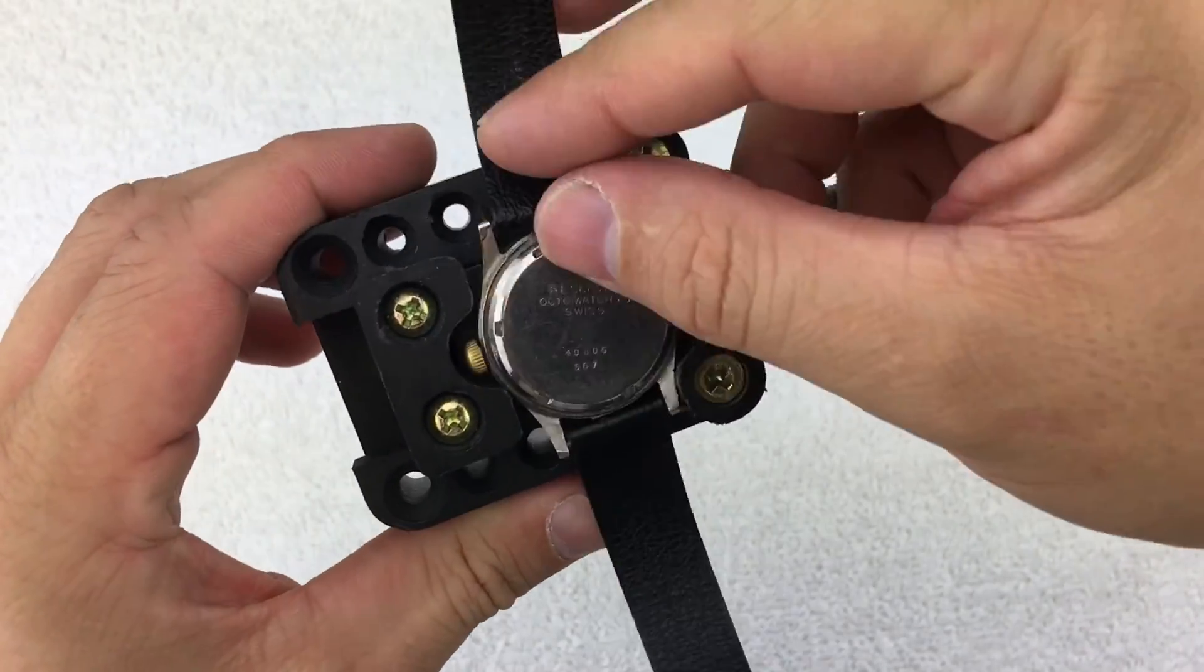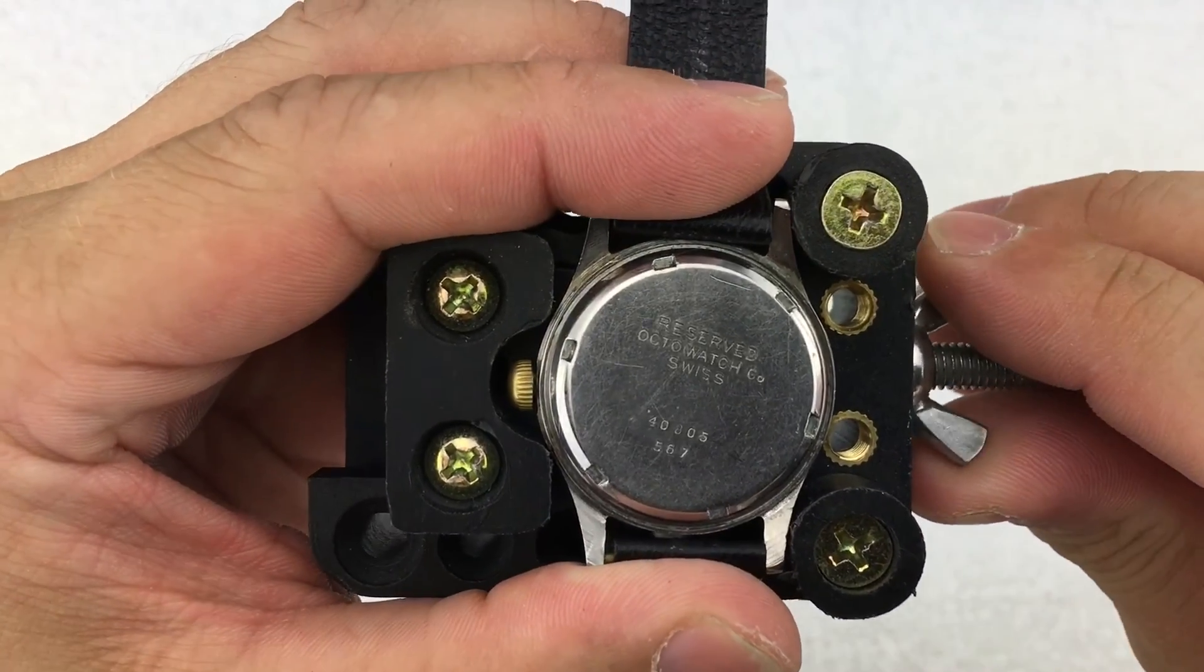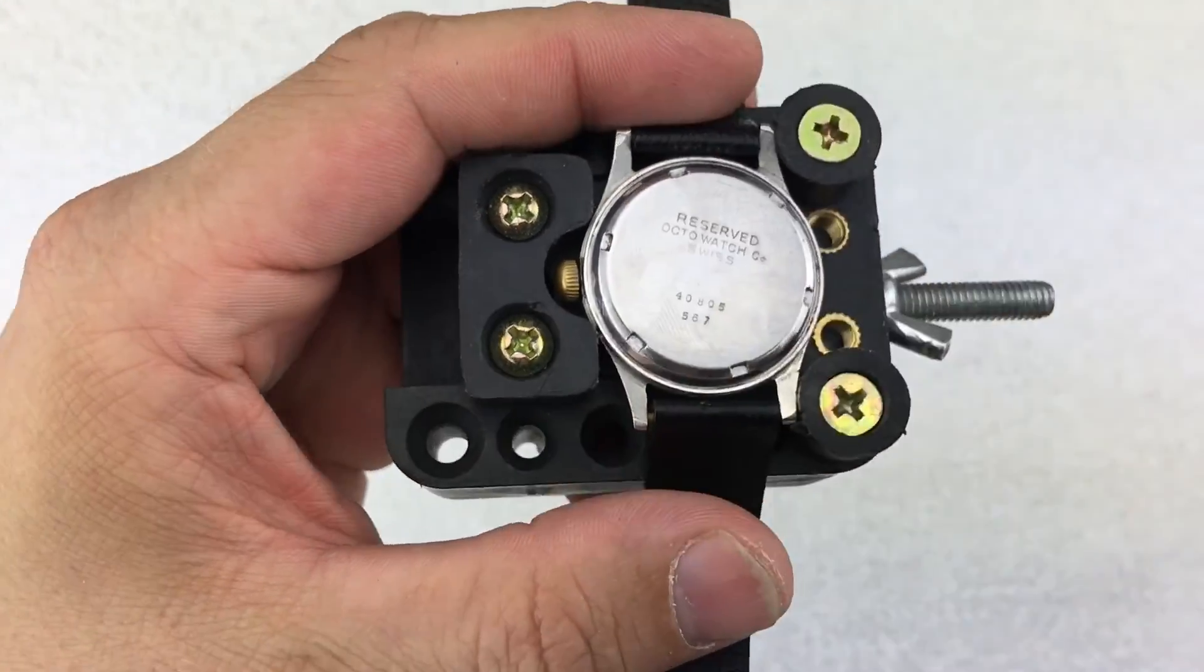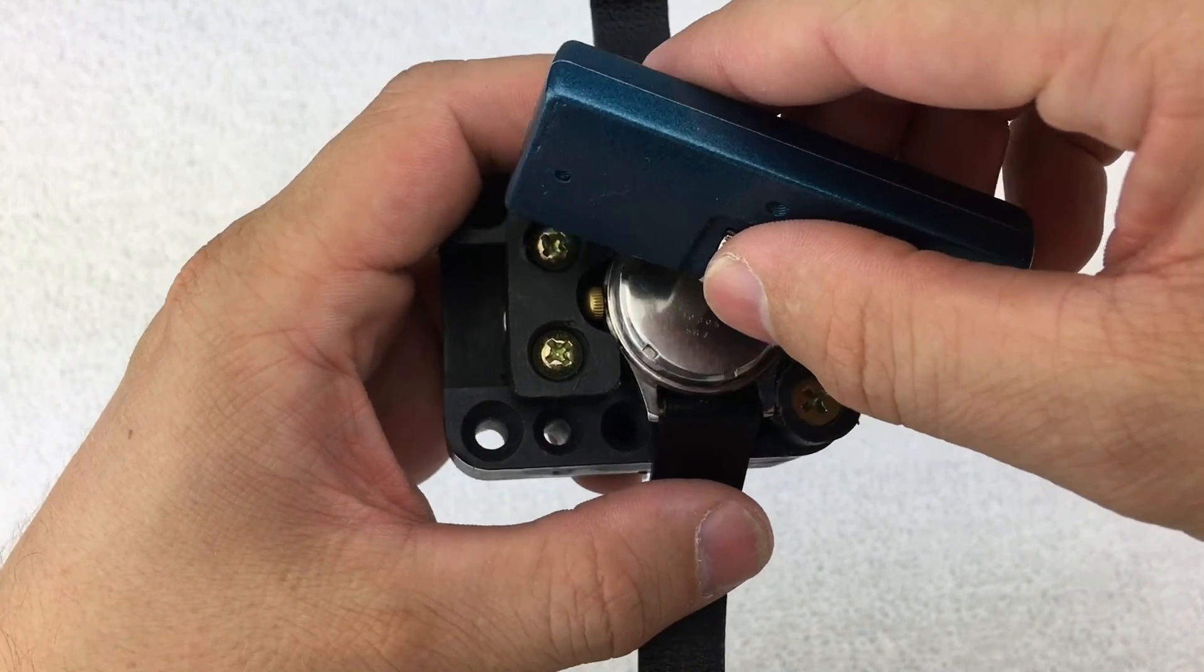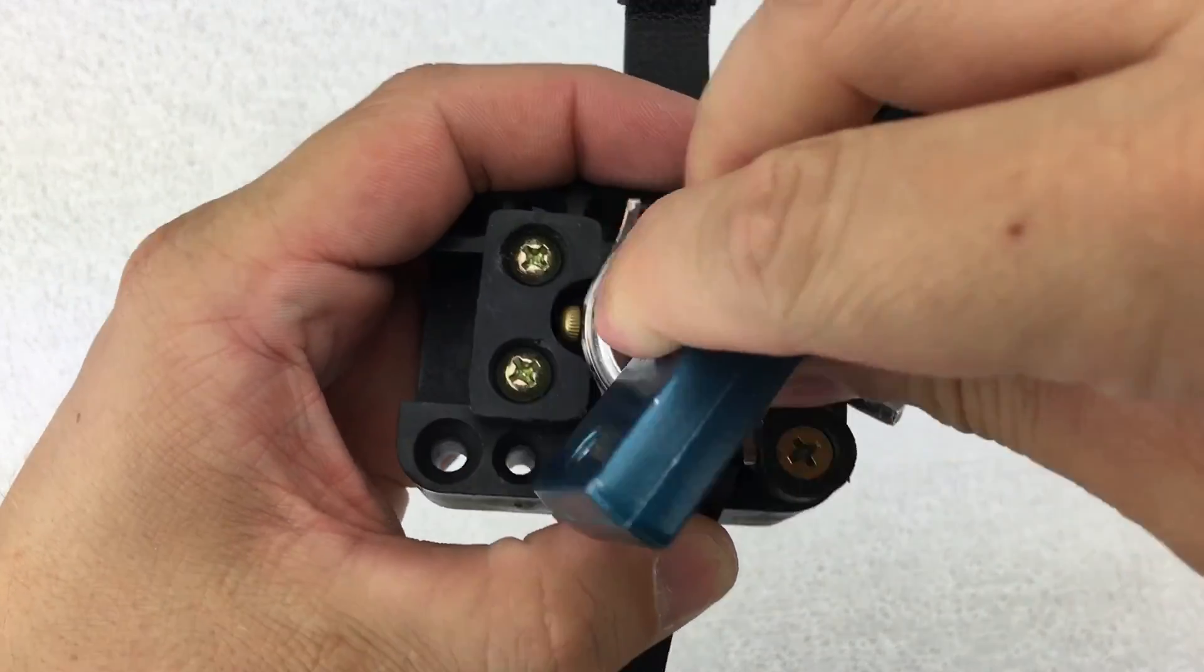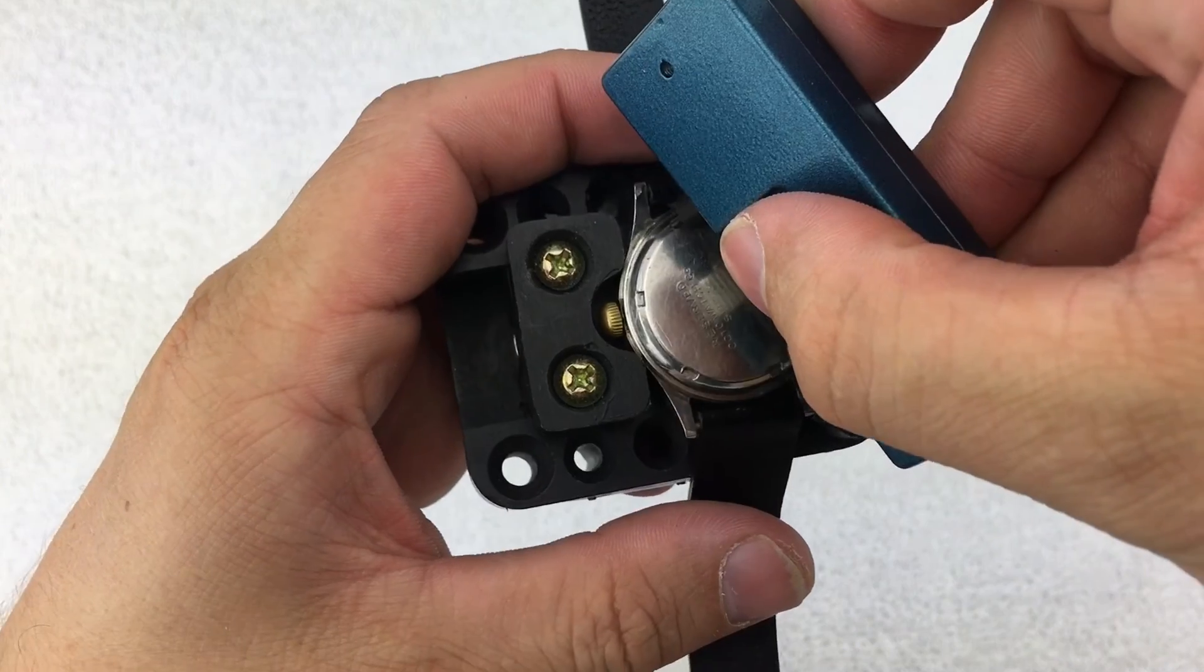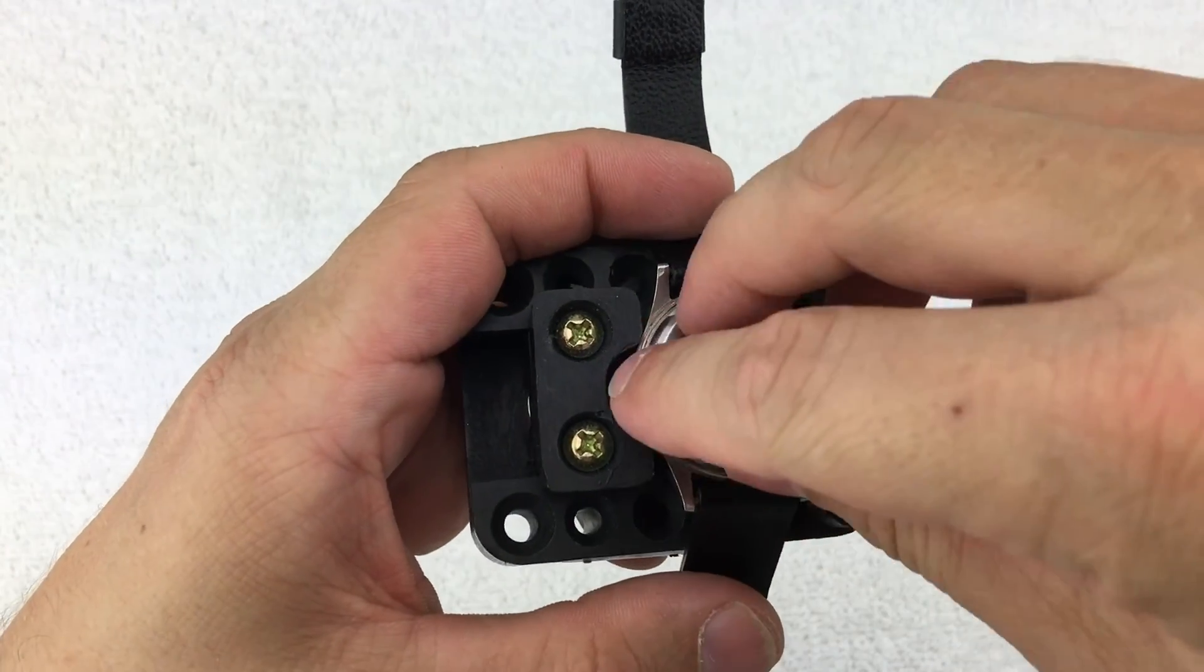I want to open up the back and we'll take a look at what's inside. If you look at the case it's got 'Reserved Octo Watch Swiss,' it does have some serial numbers but I did not find a whole lot of information. You know me, I like to check out the movement. Let's see what we got here.